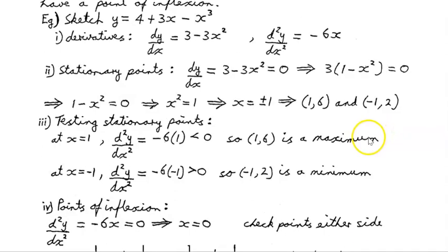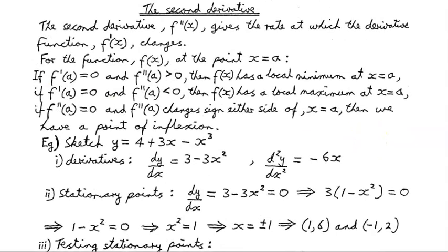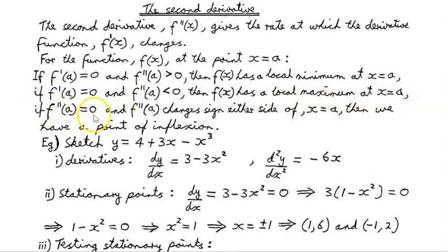The key takeaway: if the first derivative at x equals a is 0 and the second derivative is greater than 0, we have a local minimum. If the first derivative is 0 and the second derivative is less than 0, we have a local maximum. If the second derivative equals 0 and changes sign either side of x equals a, then we have a point of inflection.